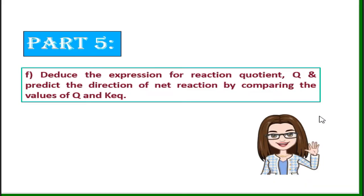Hi all! Welcome to Tiger and Cat channel. I'm your teacher, KamiKong. Today we are going to part 5 of chemical equilibrium. For this video, we focus on how to deduce the expression for reaction quotient Q and predict the direction of net reaction by comparing the value of Q and K.